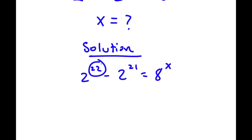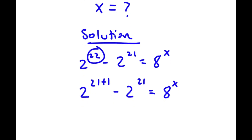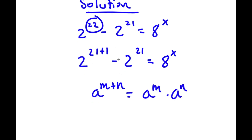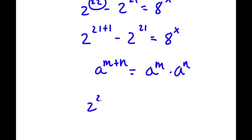Now, 22 is the same thing as 21 plus 1. So I'm going to rewrite this as 2 to the power of 21 plus 1 minus 2 to the power of 21 is equal to 8 to the power of x. Now, if I have something in the form a to the power of m plus n, this is equal to a to the power of m times a to the power of n. So 2 to the power of 21 plus 1, I can rewrite as 2 to the power of 21 times 2 to the power of 1. And I still have minus 2 to the power of 21 is equal to 8 to the power of x.